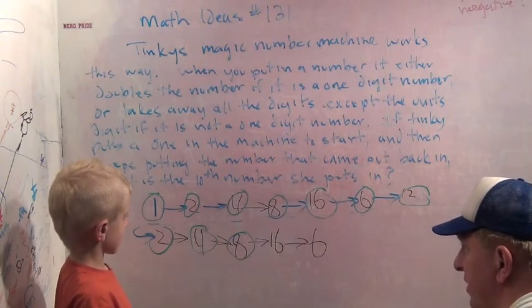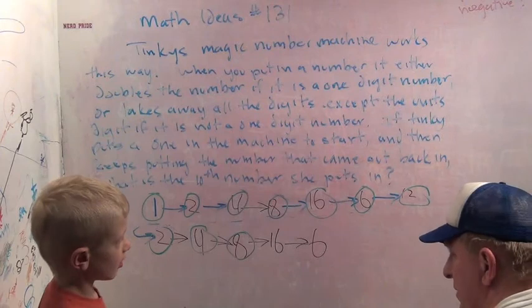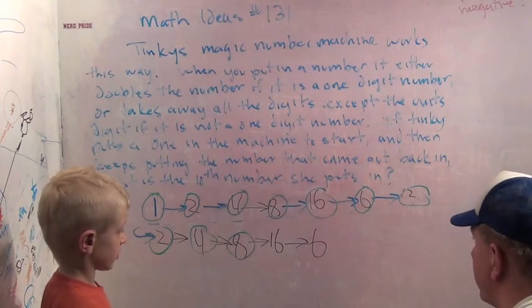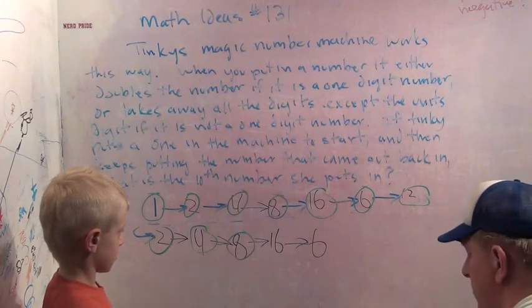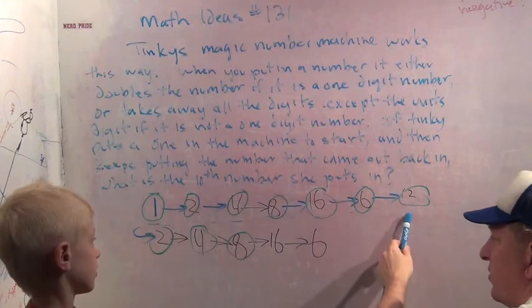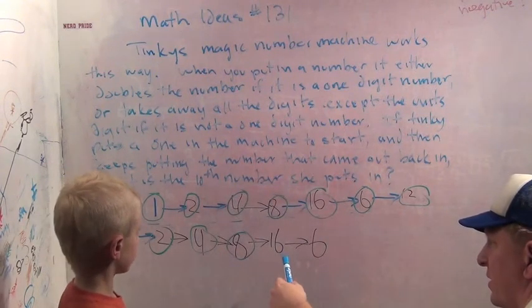And do you notice something else that happened with the machine? It was printing out powers of two for a little while. One, two, four, eight, sixteen. Then you got a six and a twelve. And the twelve turned into a two. And then what happened? Four, eight, sixteen.